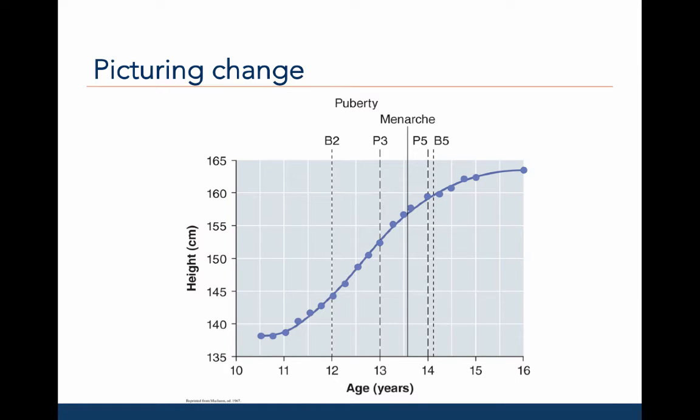This is an example graph of age-related changes — in this case, changes in height in centimeters across the ages of about 10.5 to 16 years. Age is along the x-axis. The dependent measure, height in centimeters, is along the y-axis. The dots represent measurement points for an individual, and the curved line is the estimated or fitted change across age for this individual. The vertical dotted lines indicate different phases of puberty.